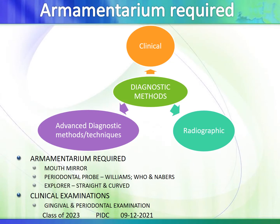Coming on to the armamentarium required: diagnostic methods need three main things — clinical examination along with the basic armamentarium, radiographic investigations, and recently, advanced diagnostic methods. The clinical requirement includes mouth mirror, probe, and explorer, and the clinical examination includes gingival and periodontal examination.